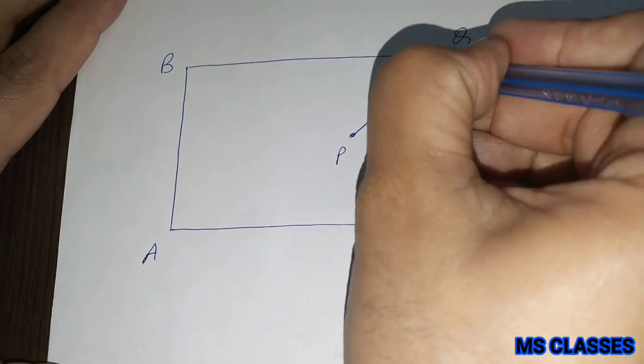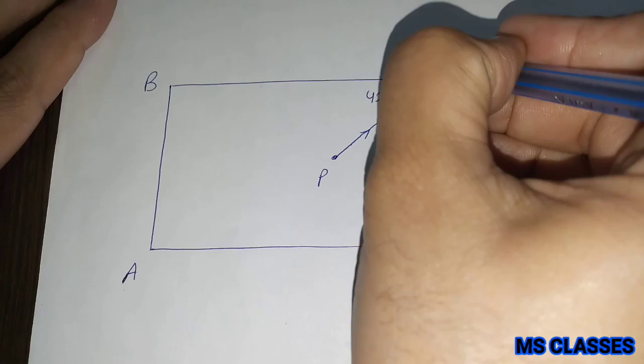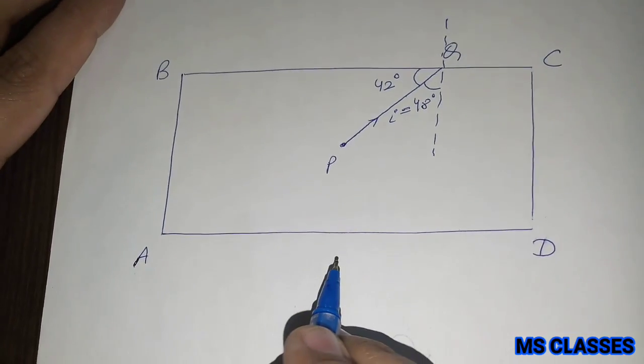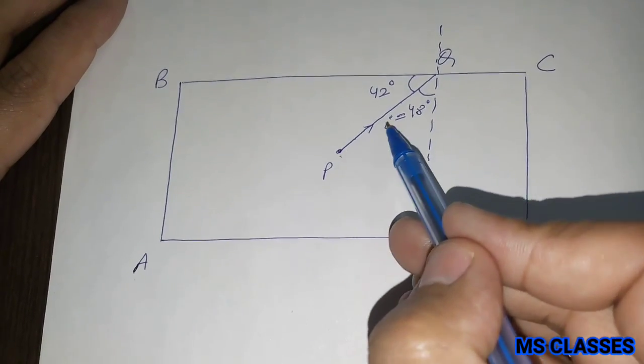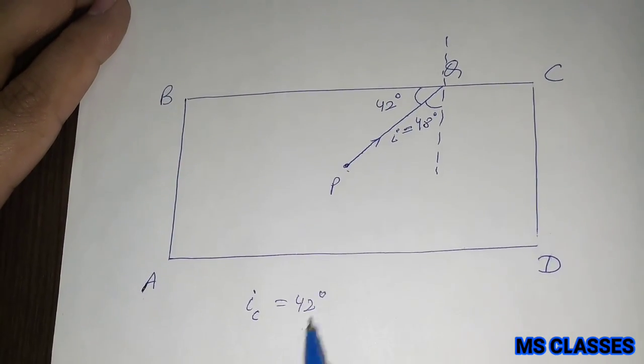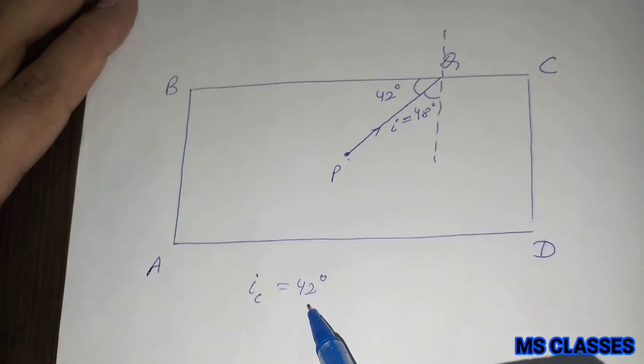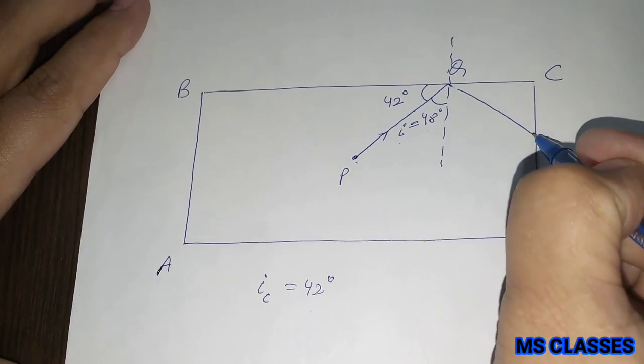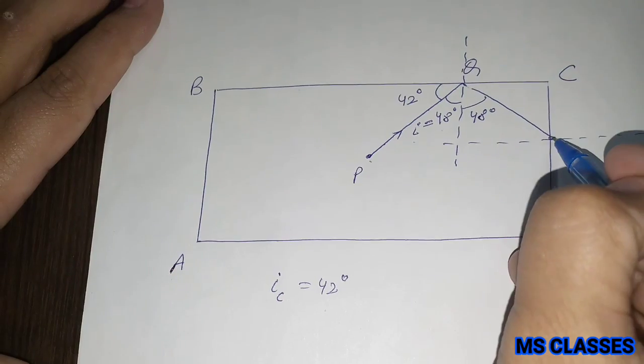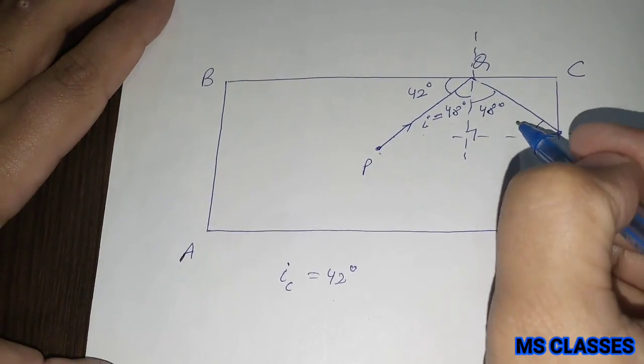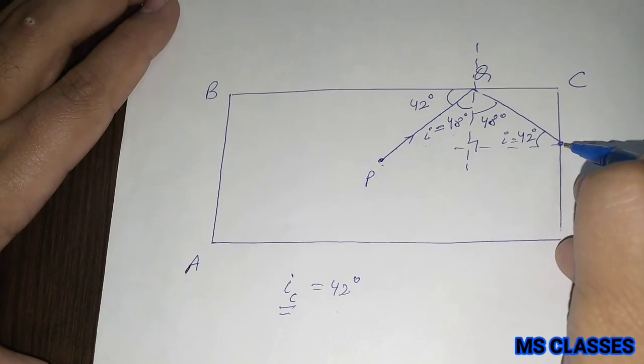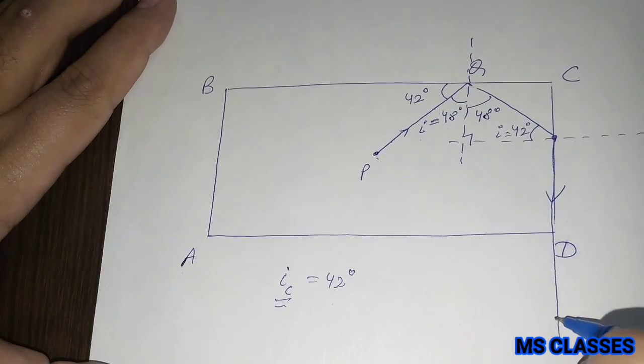This is the ray making an angle of 42 degrees. If we draw the normal, this angle would be 48 degrees and that would be our angle of incidence, because the angle of incidence is the angle made by the incident ray with the normal. Now, as the critical angle is given as 42 degrees and our angle of incidence is 48 degrees, which is greater than 42 degrees, that will follow total internal reflection, making an angle of 48 degrees. Now if we draw the normal at this point, since this is 90, this is 48, so that would be 42 degrees. As the angle of incidence is 42 degrees, which is equal to the critical angle, that ray will graze the surface of the rectangular glass block.